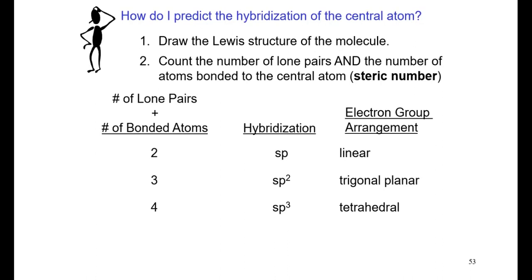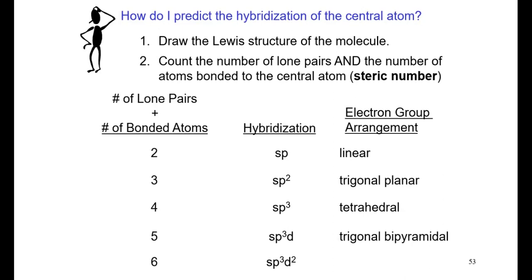For atoms in the third period and below that can expand beyond the octet, five electron groups require sp3d hybridization — combining one s, three p, and one d orbital — giving a trigonal bipyramidal shape. Six electron groups require sp3d2 hybridization — one s, three p, and two d orbitals — giving an octahedral shape, consistent with VSEPR predictions.